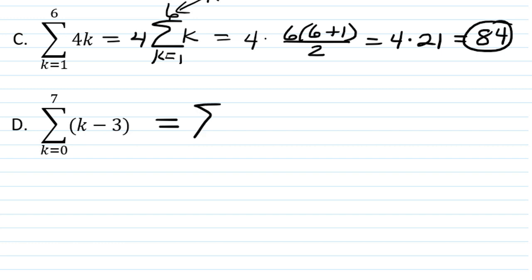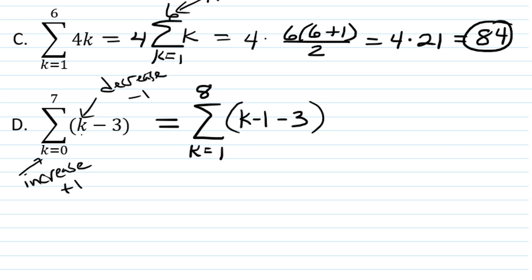So before we even start to try to evaluate this, we're going to rewrite it as an equivalent summation that starts at 1. So how would I have to change the argument of the sum if I started at 1 and went to 8 instead of going from 0 to 7? I would still notice I'd still have the same number of terms. I've increased k by 1 in each case. If we're increasing the index, we're going to have to decrease the argument to compensate. We increased the index by 1, so we're going to have to decrease the argument by 1. So we're going to have k minus 1 minus 3. That way we get the same terms. And if you're ever not sure that you did it right, you can always check the first few terms plugging in the values of k and see if you get the same first few terms.